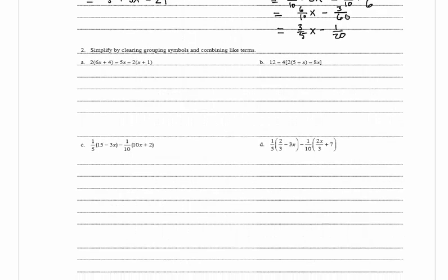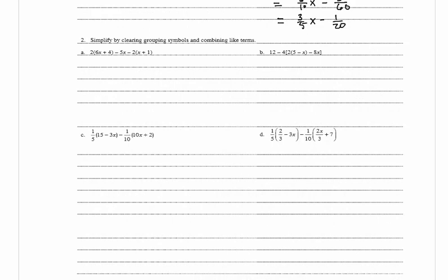In problem 2, we simplify by clearing grouping symbols and combining like terms. First, we use the distributive property — distributing the 2 out in front of the parentheses times the terms 6x and 4.